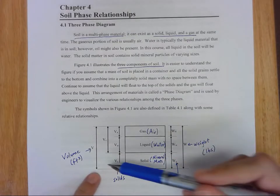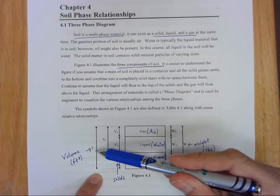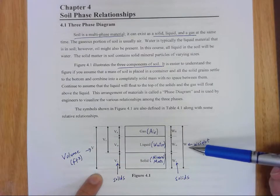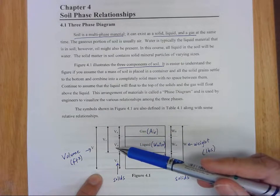So we have a volume of our total sample here, that's our big V with no subscript. A weight for our total sample here, that's a big W with no subscript. And those totals are made up of their component parts.